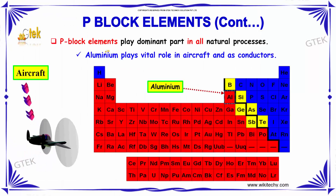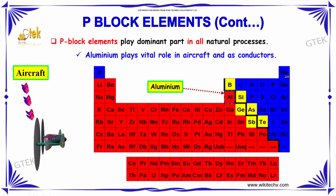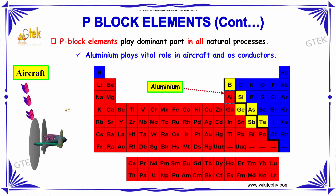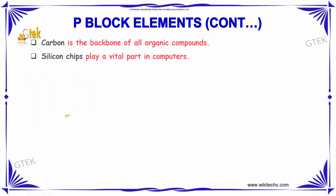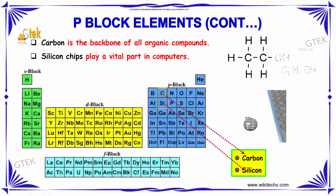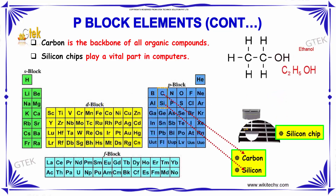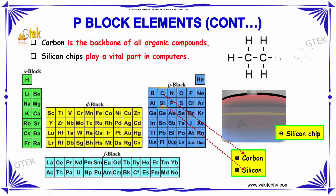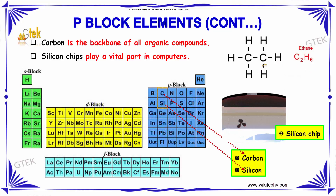The P-block elements play a dominant part in all natural processes. Aluminium plays a vital role in aircraft and is also used as a conductor. Carbon is the backbone of all organic compounds. Silicon chips play a vital role in computers.